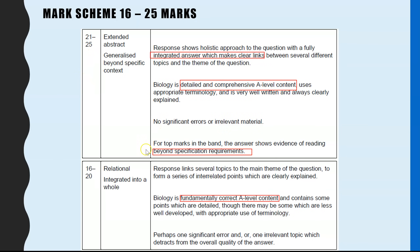To get 24 or 25, you have to achieve the top criteria in addition to everything else. You also have to have evidence of reading beyond the specification — meaning a substantial amount of what you've written has to be information beyond the specification, biology theory not taught at A-level.